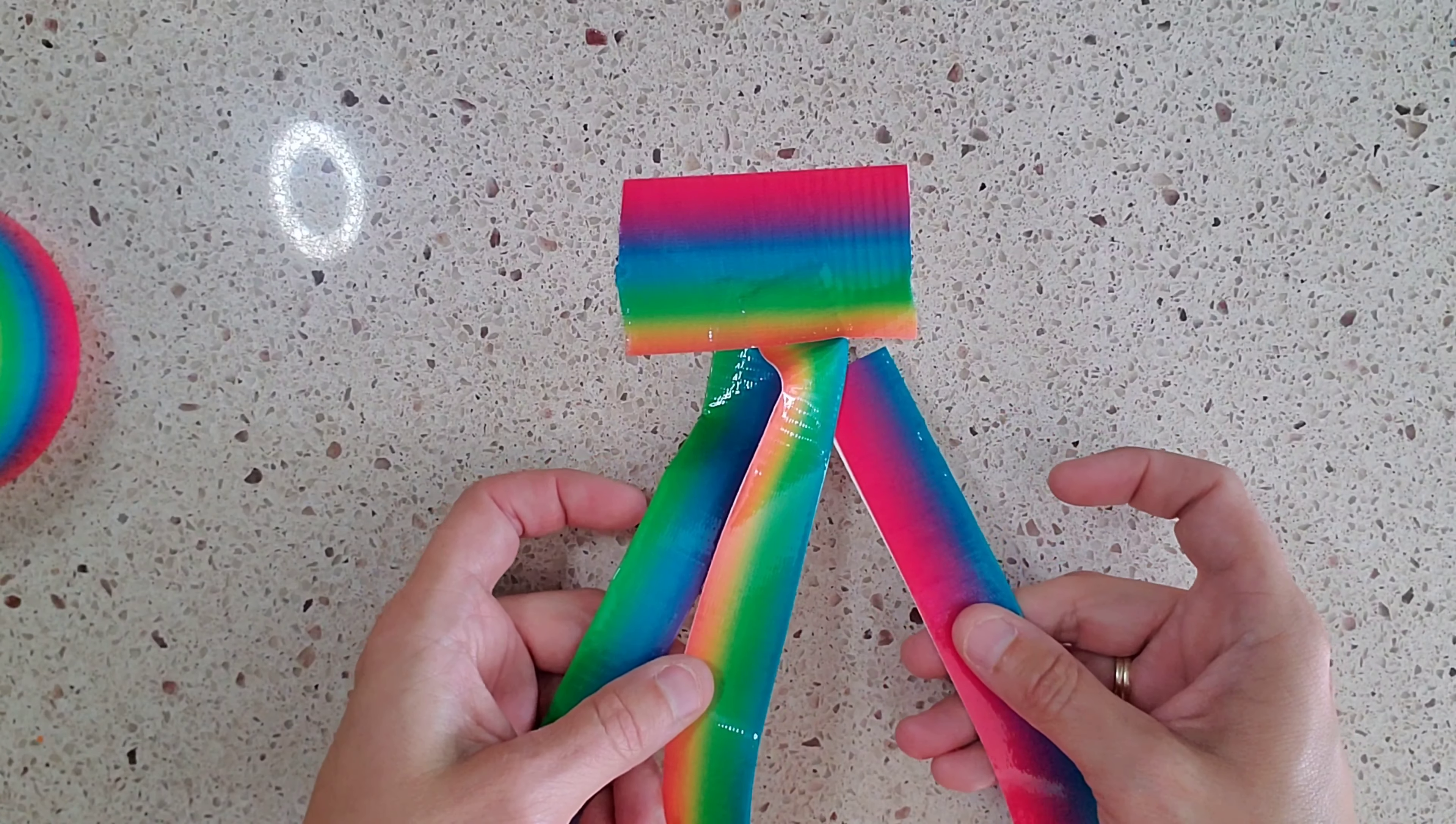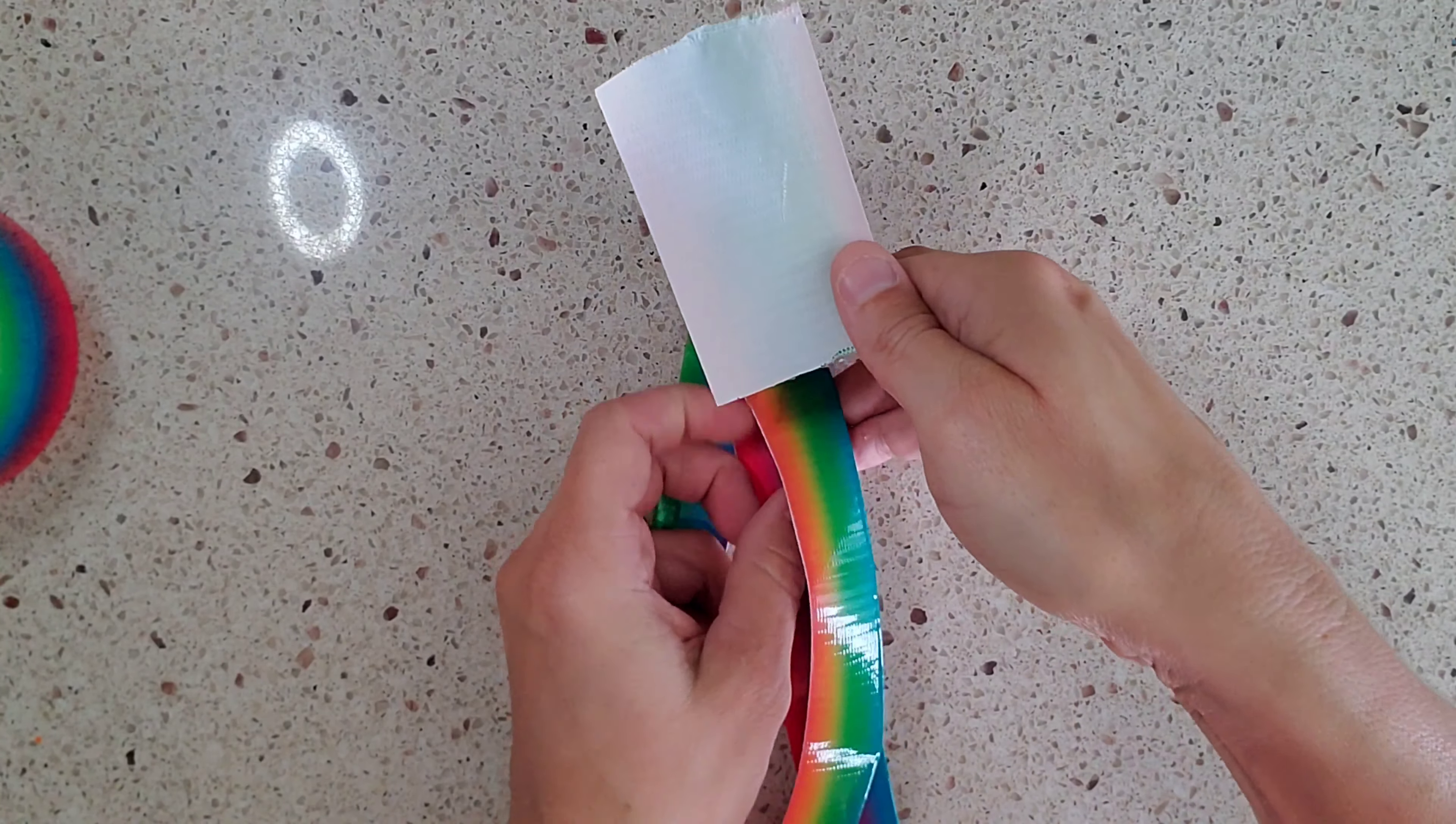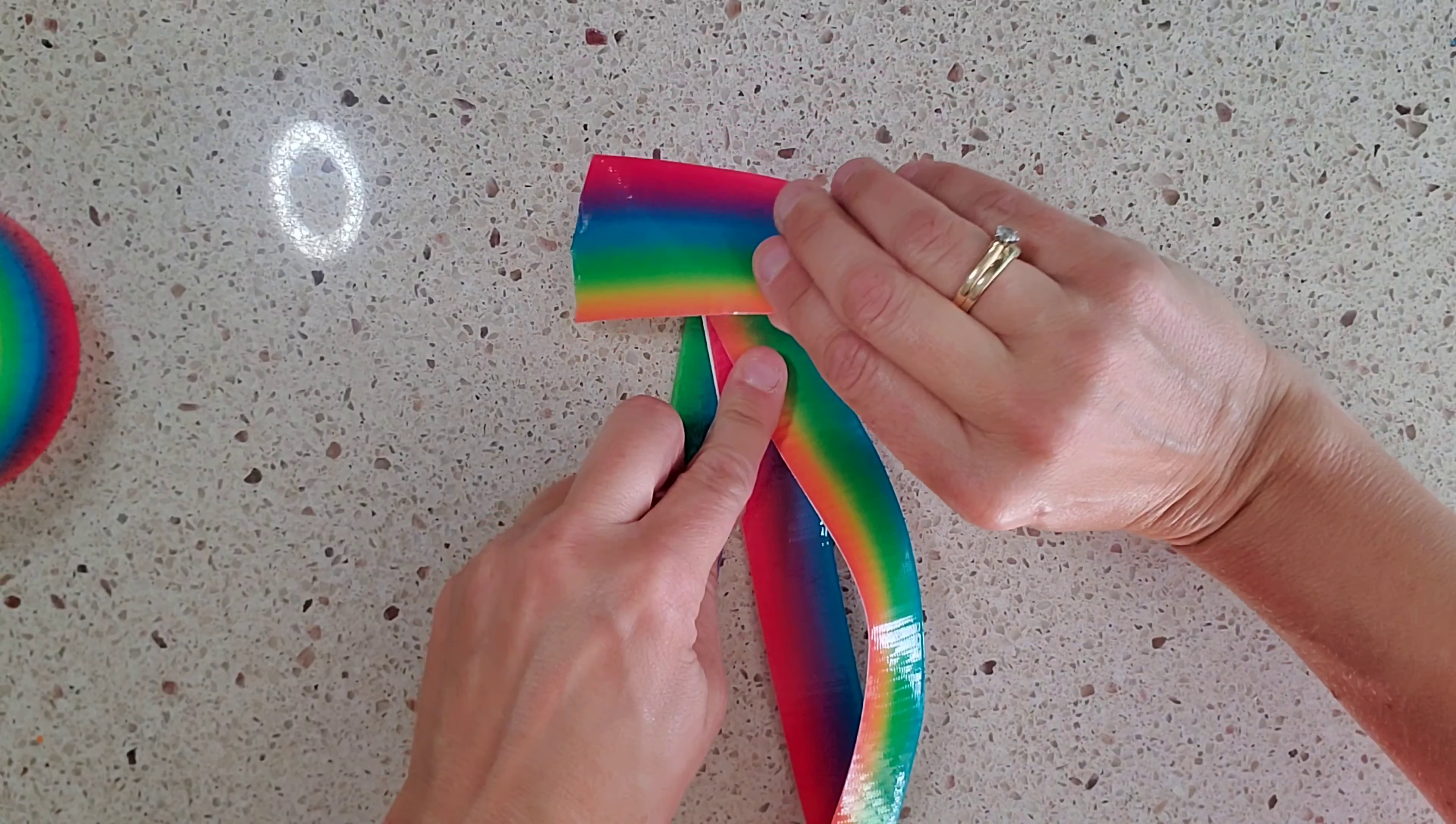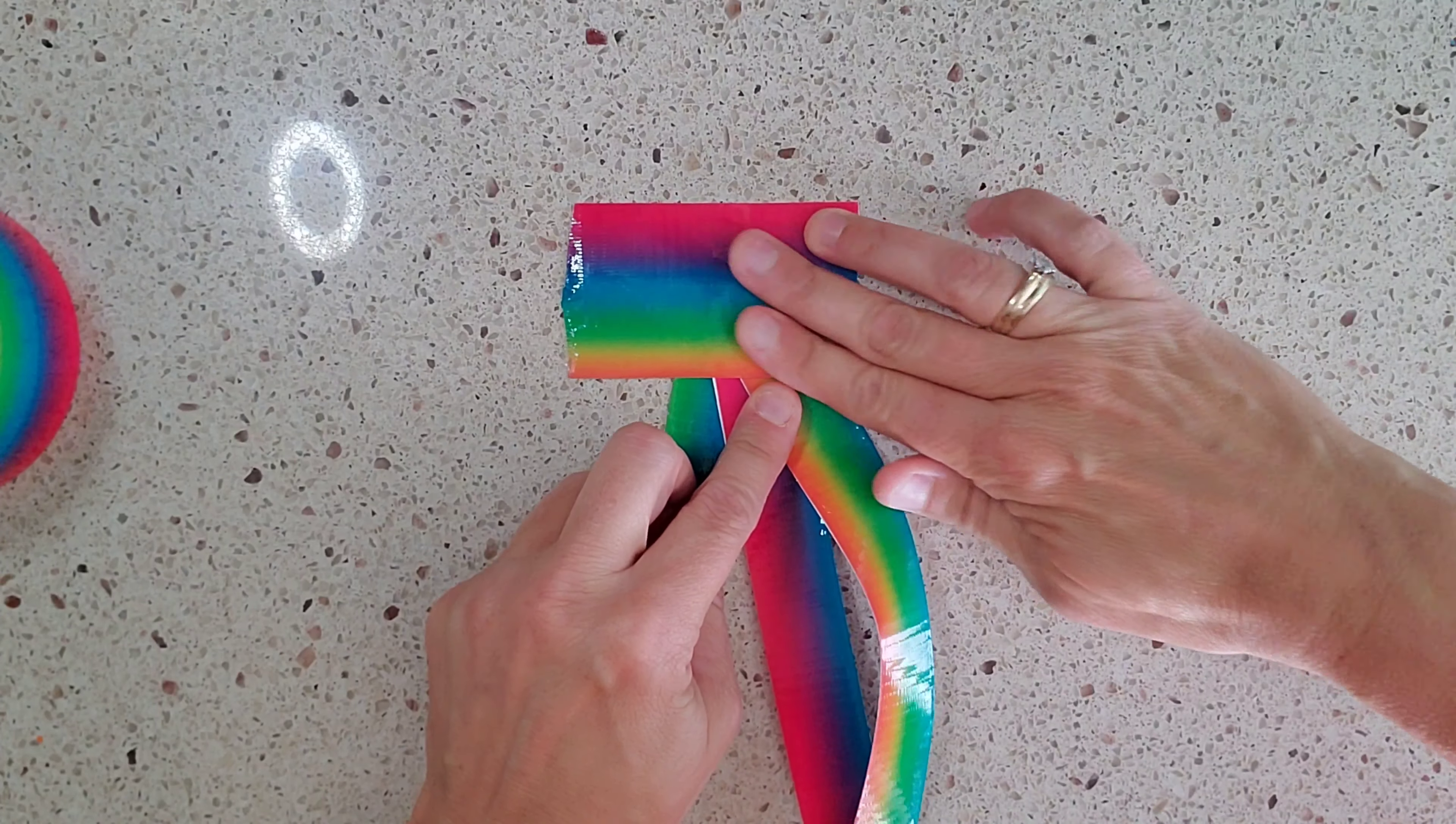So if that pulls out like it's doing here it just means you need to re-tape it again and make sure it's pretty secure. If you have some kind of a clamp that would work well too. You can clamp the actual duct tape down which would maybe make it a little easier.